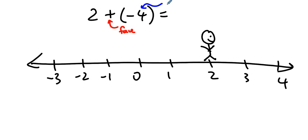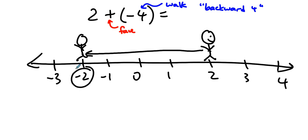But this is how we walk. And we are walking backward 4. So if I'm facing the positive end of the number line, but I'm walking backward, that's 1, 2, 3, 4, end up here. 2 + (-4) is -2.